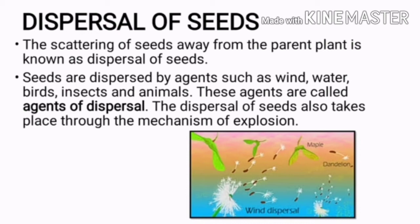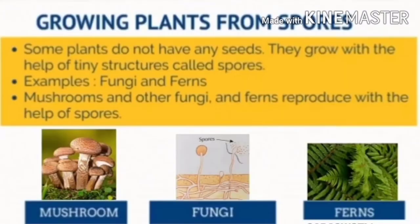And that is new plants from spores. Children, some plants do not have any seeds. They grow with the help of tiny structures, and these structures are called spores. The best examples are fungi, fern, and even mushroom.